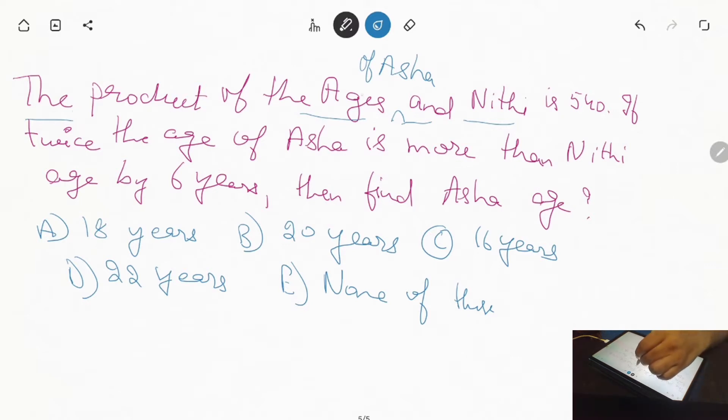The product of the ages of Asha and Nithi is 540. If twice the age of Asha is more than Nithi's age by 6 years, then find the age of Asha. The options are: A is 18 years, B is 20 years, C is 16 years, D is 22 years, and E is none of these. So now we will solve this.